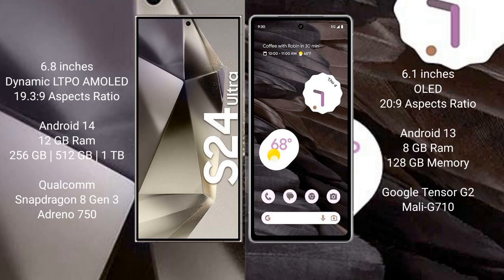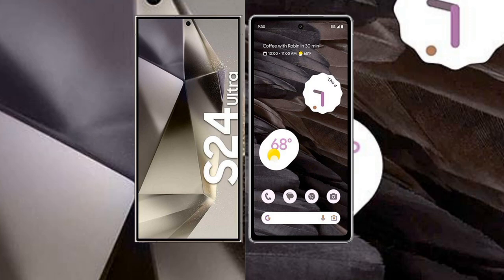The Samsung Galaxy S24 Ultra comes with 12GB RAM and 256GB, 512GB, or 1TB internal storage, with a Qualcomm Snapdragon 8 Gen 3 processor and GPU Adreno 750. The Google Pixel 7a comes with 8GB RAM and 128GB internal storage, with a Google Tensor G2 processor and GPU Mali-G710.